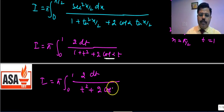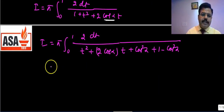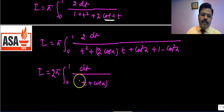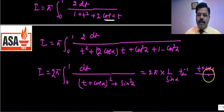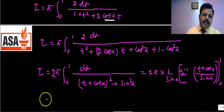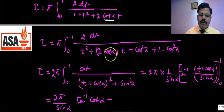Completing the square in the denominator: t² + 2cosα·t + cos²α + (1 − cos²α) = (t + cosα)² + sin²α. So I = π·∫₀¹ 2dt/[(t + cosα)² + sin²α], which by the standard formula gives (2π/sinα)·[tan⁻¹((t + cosα)/sinα)]₀¹.